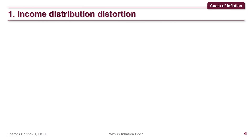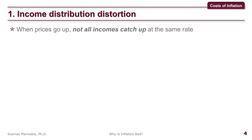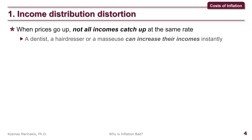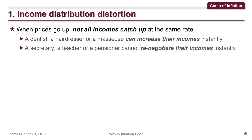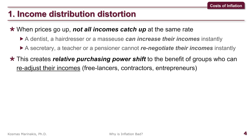The first societal problem is the distortion in the distribution of income. When prices go up, not all incomes catch up at the same rate. A dentist, a hairdresser, or a masseuse can increase their incomes instantly because they just update their price list and their revenue is automatically increased. A secretary, a teacher, or a pensioner, on the other hand, cannot renegotiate their incomes instantly because their wages are bound by a contract or require the government to change them. This creates a relative purchasing power shift to the benefit of groups who can readjust their incomes, such as freelancers, contractors, or entrepreneurs. Inflation therefore makes hired workers and pensioners relatively poorer than freelancers and entrepreneurs.